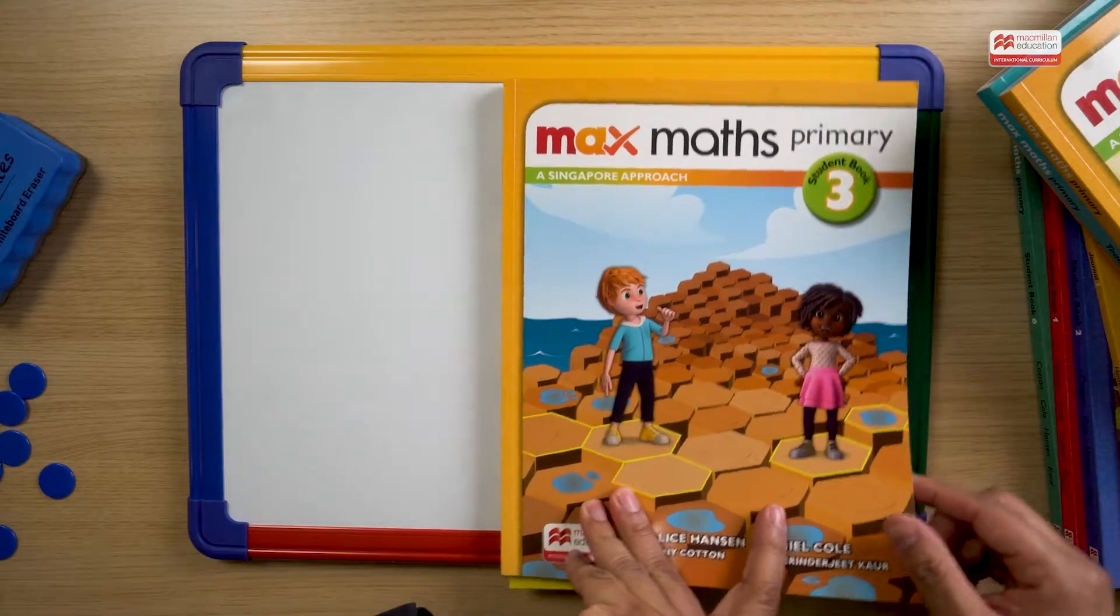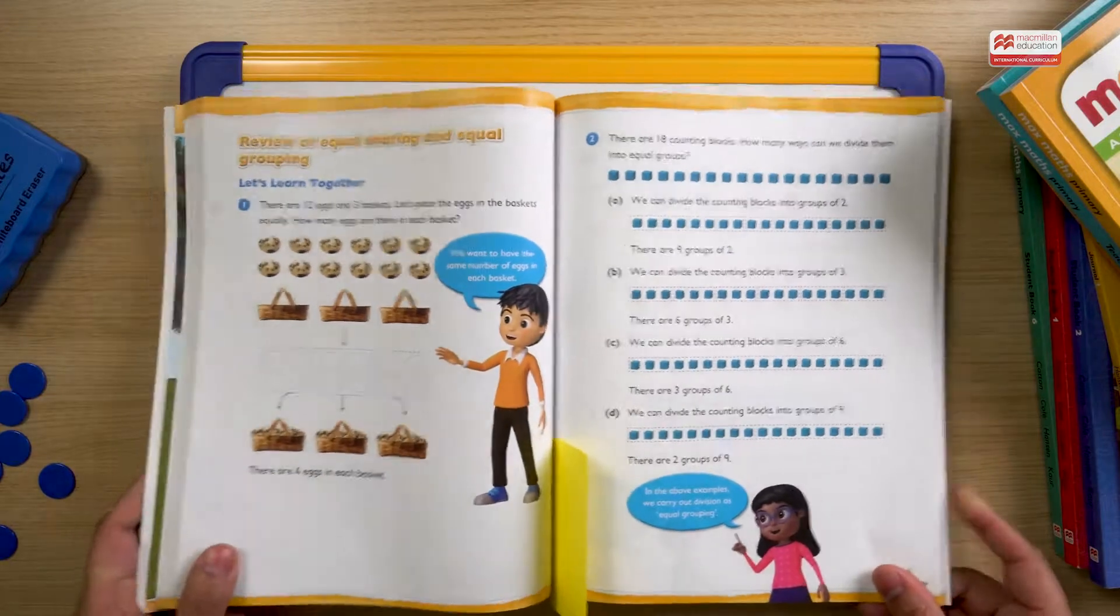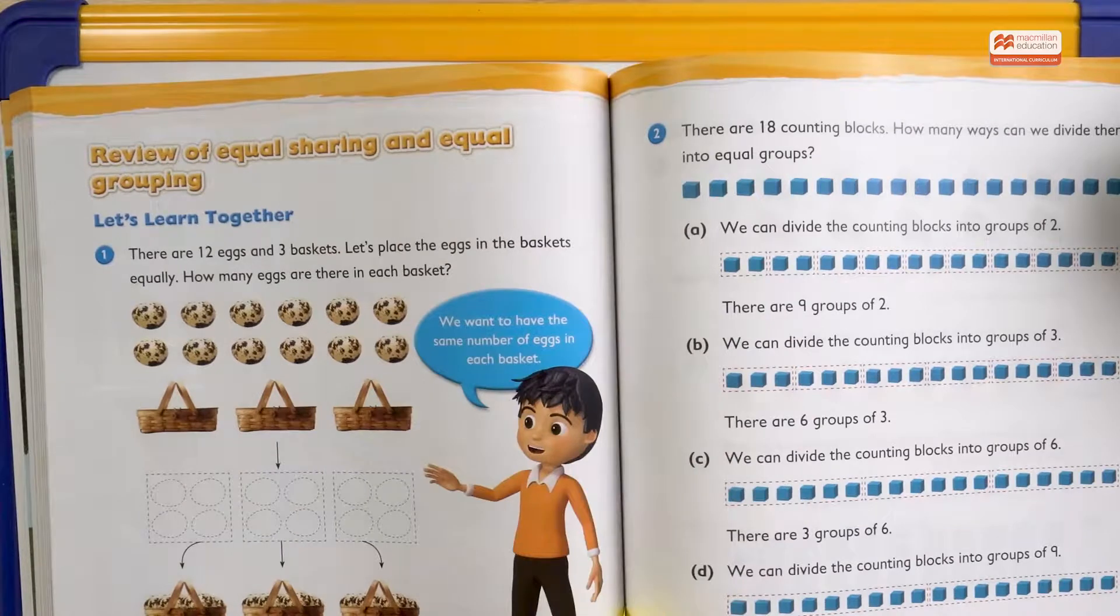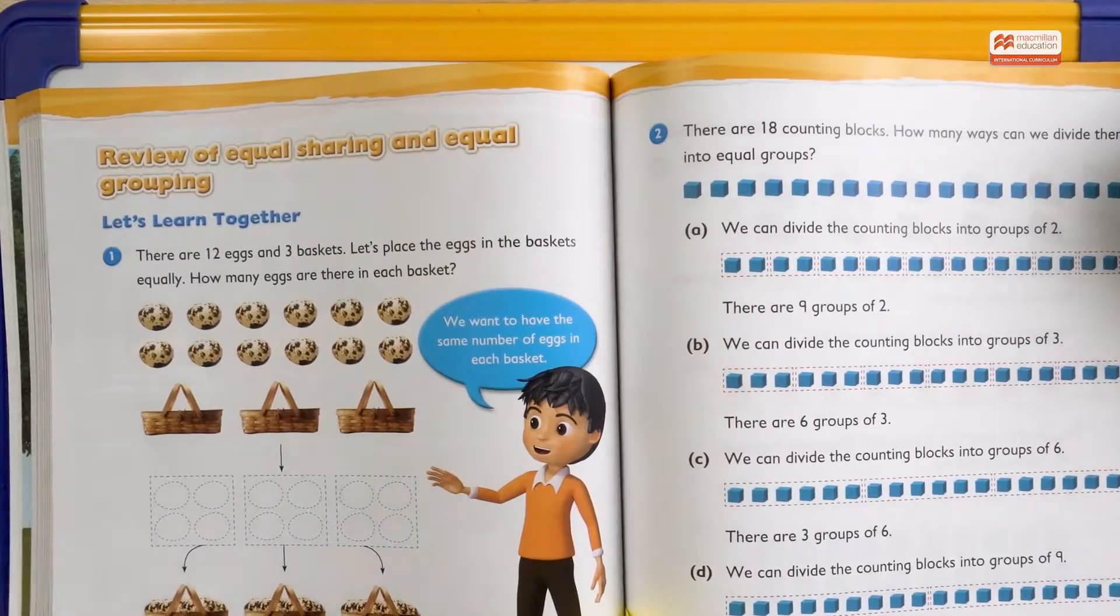We're going to look at a lesson from Max Maths Primary Student Book 3. This lesson is on division. There are two types of division: equal sharing and grouping, sometimes known as sharing and grouping.